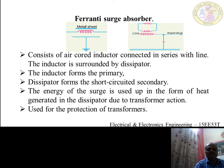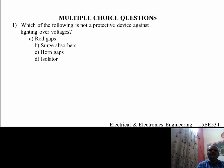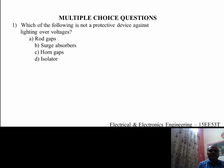Now let us assess what we have learned today with some MCQs. The first question is: which of the following is not a protective device against lightning overvoltages? The options are rod gaps, surge absorber, horn gaps, and isolator. Rod gap is a protective device, surge absorber is a protective device, horn gap is also a protective device. The answer is isolator — the isolator is just like a switch.